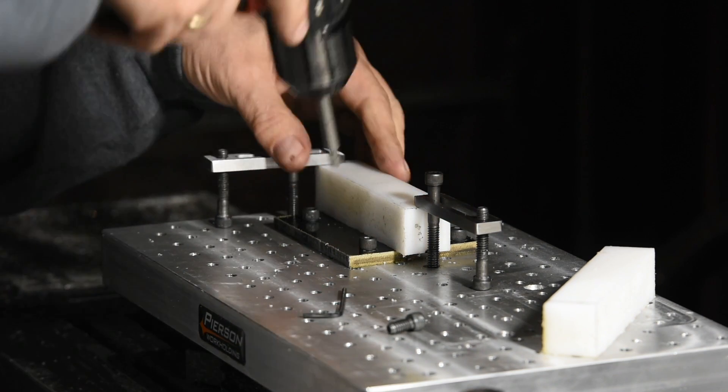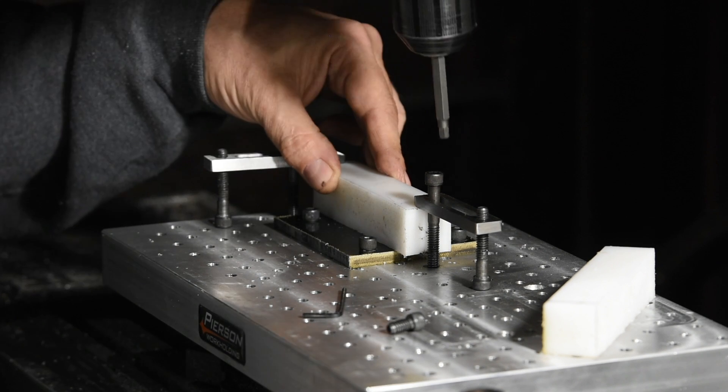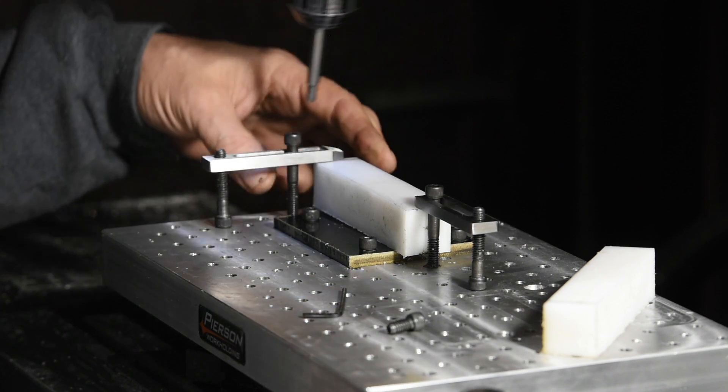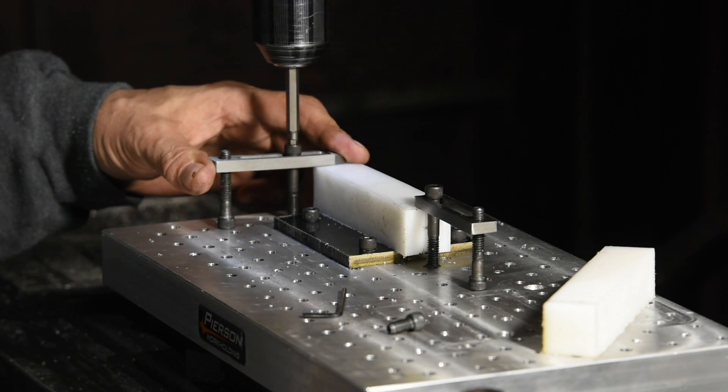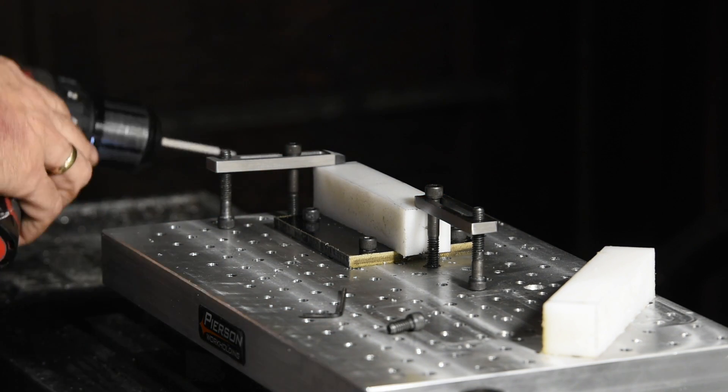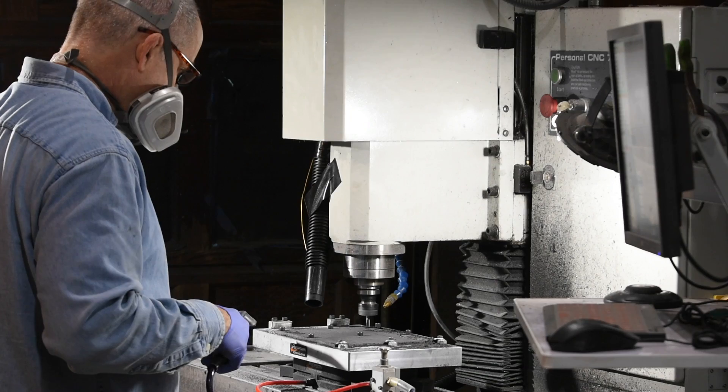I'll be using PTFE for the vise jaws, which is a fancy name for Teflon. Teflon mills really nicely. It's just a good material for vise jaws that you want to grip things decently without marring your work. I could run feeds and speeds about as fast as my machine can go without any problems, though I didn't really push it that much in reality.